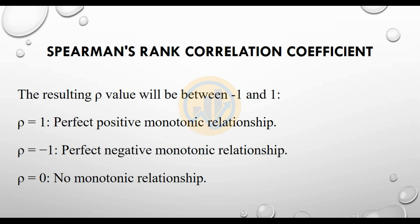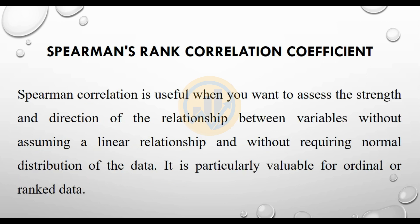The rho value will be between minus one and plus one. Rho equal to one indicates a perfect positive monotonic relationship. Rho equal to minus one indicates a perfect negative monotonic relationship. And rho equal to zero means there is no monotonic relationship.